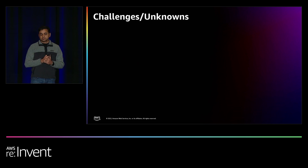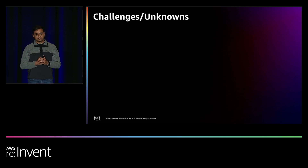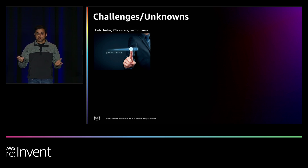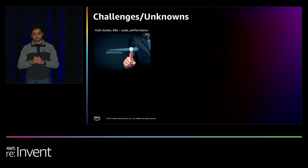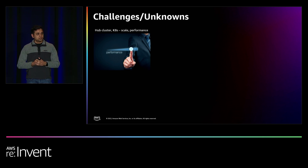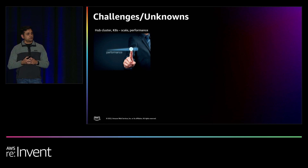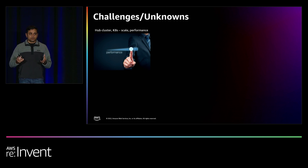Let's talk about challenges and unknowns. The first challenge is around performance: Adobe has thousands of services that will be running and doing deployments and infrastructure provisioning through the single hub cluster. We're trying to figure out whether we need multiple hub clusters in the future, what the true limits are with one hub cluster, and also resolving the Kubernetes performance challenges Gaurav mentioned. We are still on Kubernetes 1.22 and trying to move to 1.23, and need to test what challenges will be resolved with the latest version.